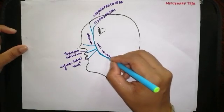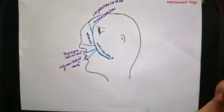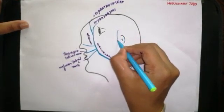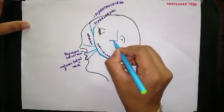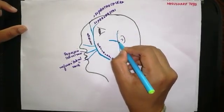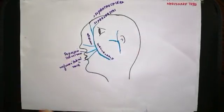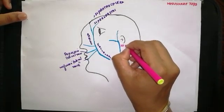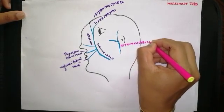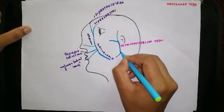The facial vein continues. There is another vein known as the retromandibular vein, which is formed by the union of the superficial temporal vein and the maxillary vein. The retromandibular vein has an anterior division and a posterior division.